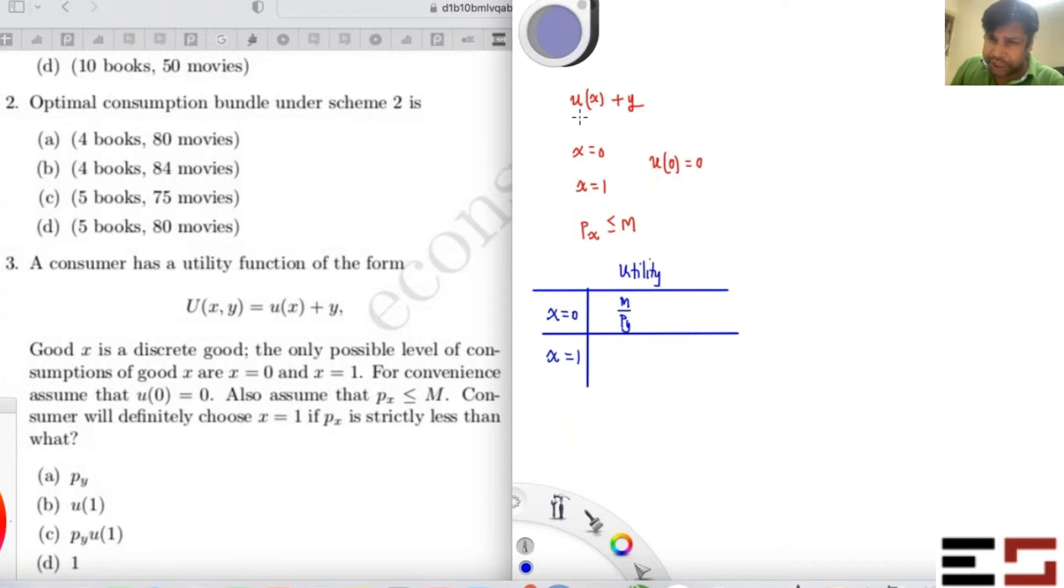So your utility will be u(0) plus M by P_Y. And since u(0) is 0, the utility is M by P_Y. Do you agree?